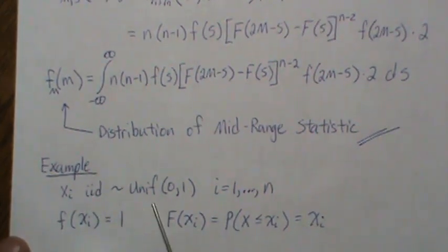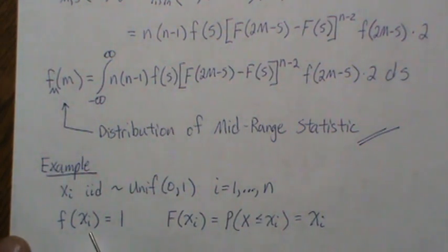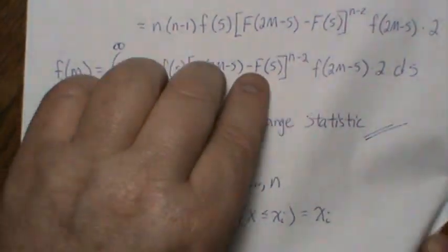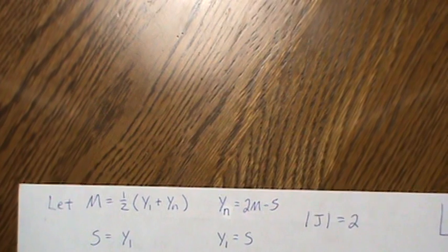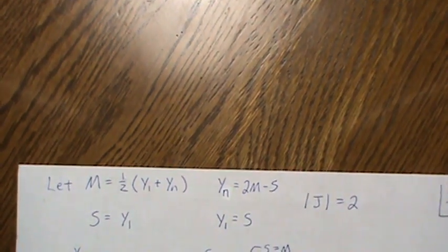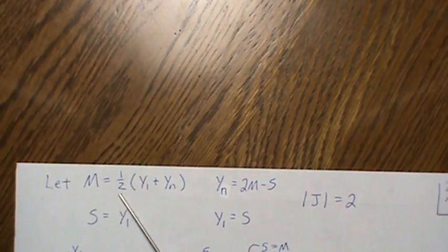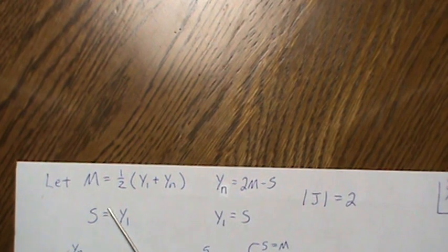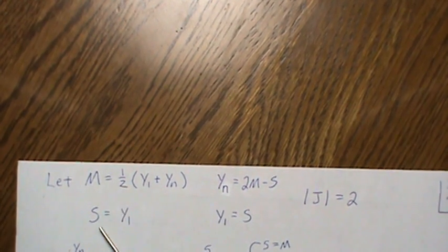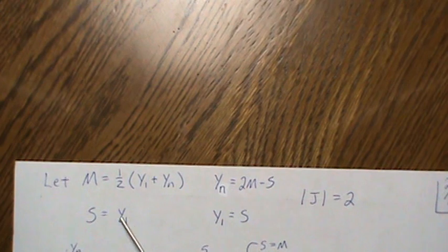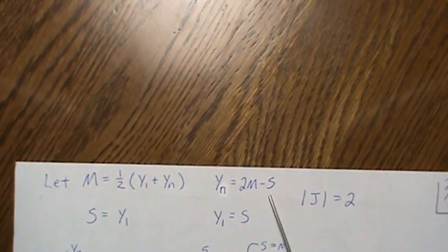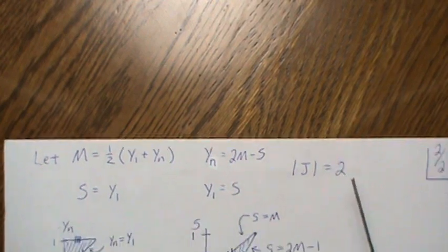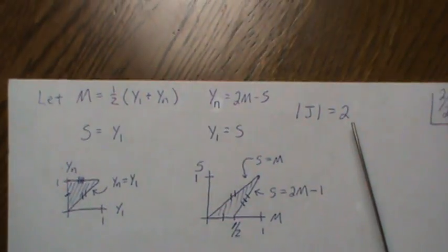As an example, let the data be IID Uniform(0,1) with sample size N. The density f equals 1 and the CDF F(x) equals x. We want to find the density of the mid-range statistic M — the mean of the smallest and largest values — so we create the dummy variable S, find the joint density, and integrate out S. Back-solving gives Y_1 = S and Y_N = 2M − S, with Jacobian 2.